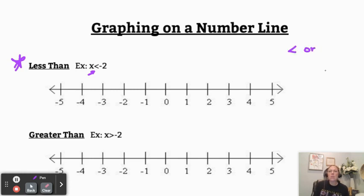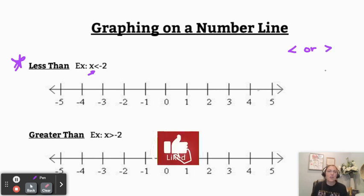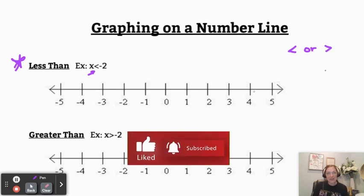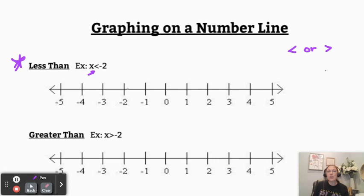So anytime you have a less than or a greater than, you're going to be putting an open circle at that number. So at negative 2 on our number line, I'm going to put an open circle.